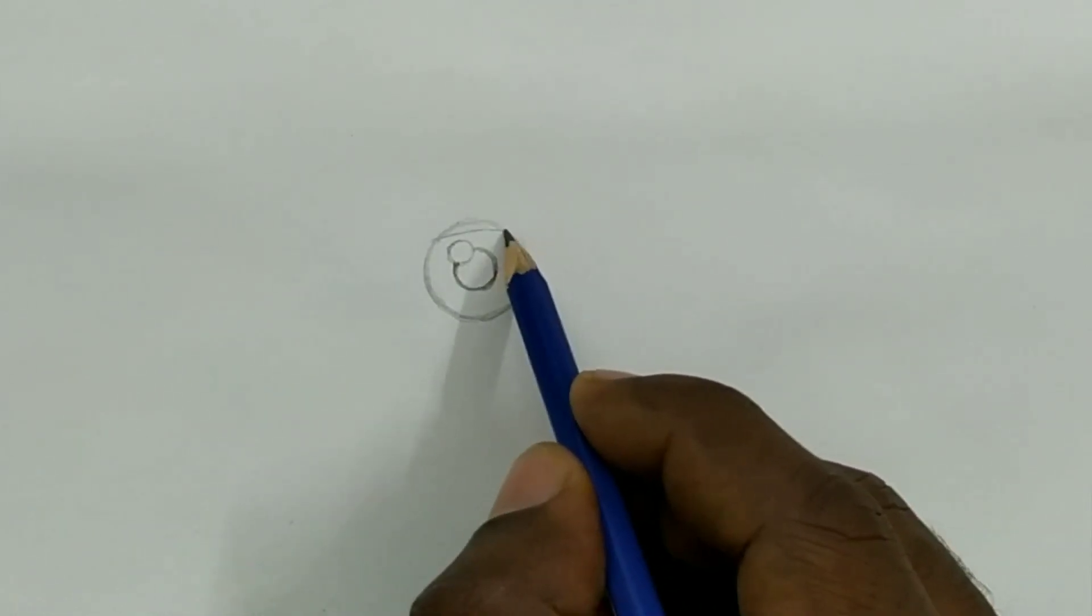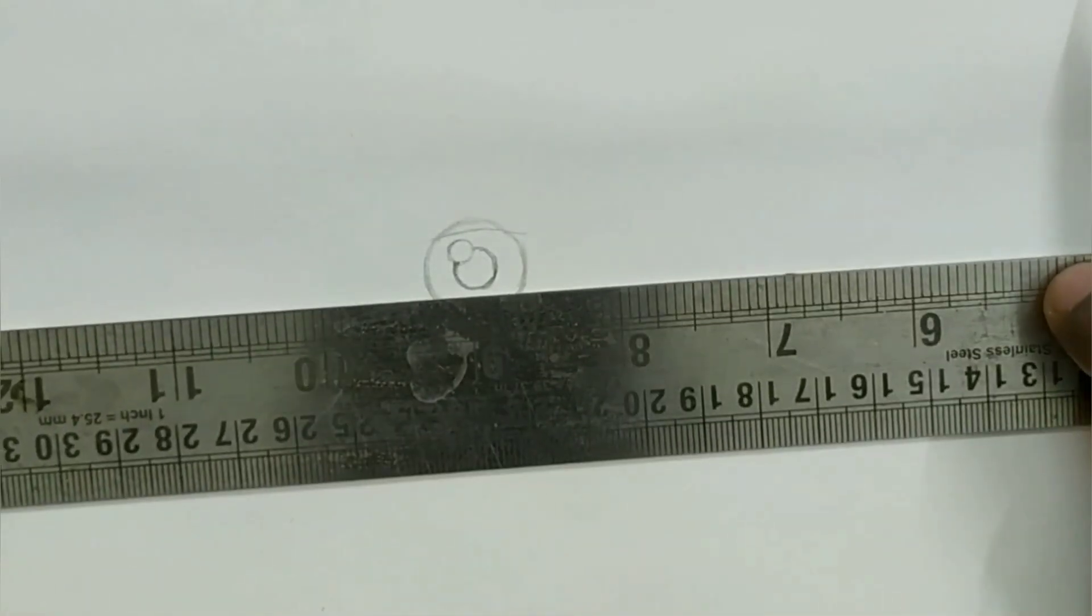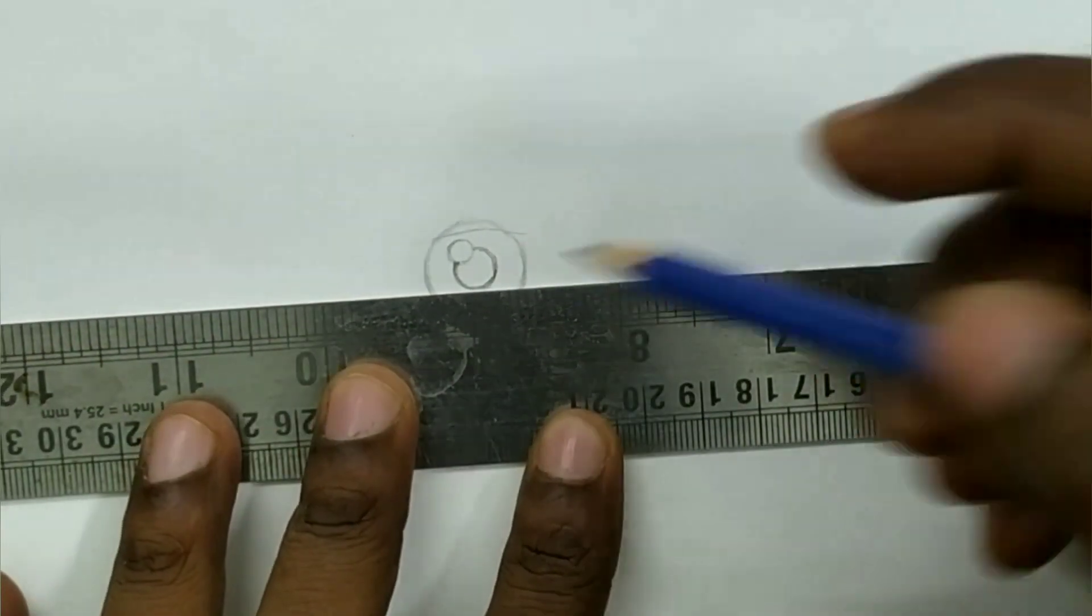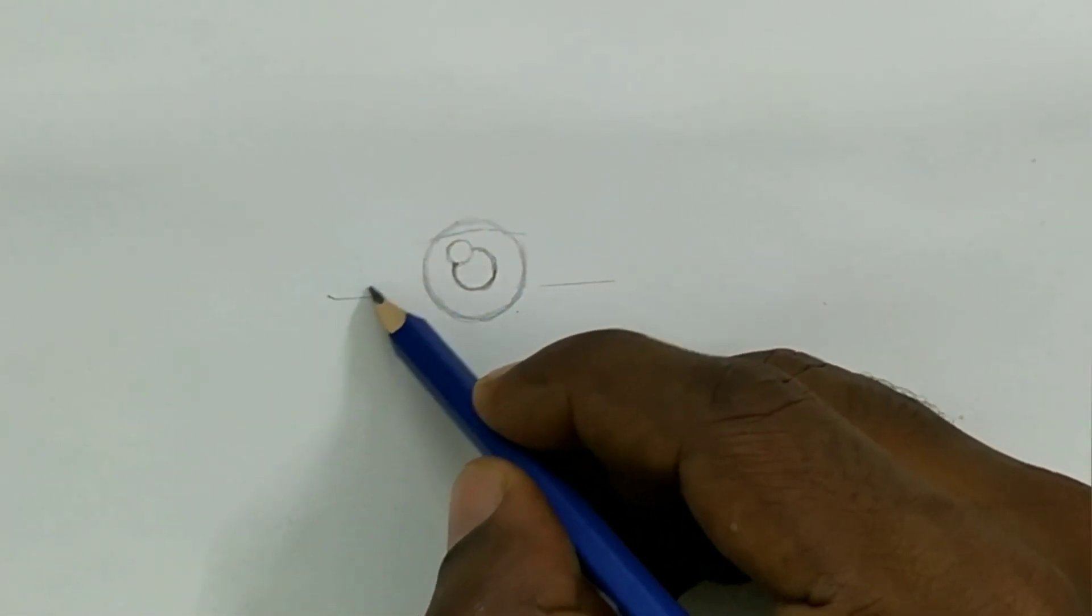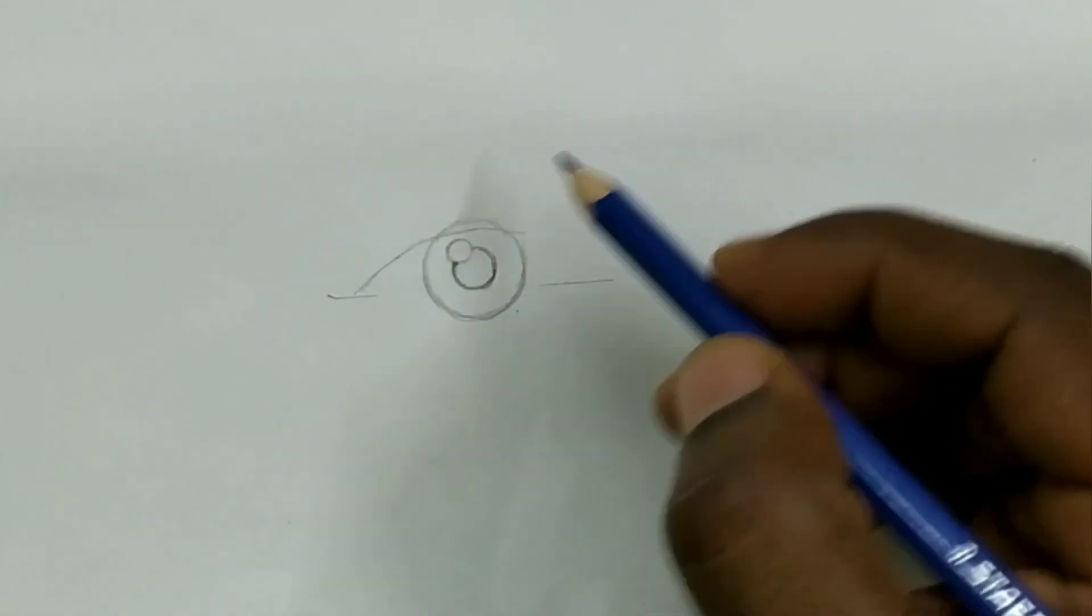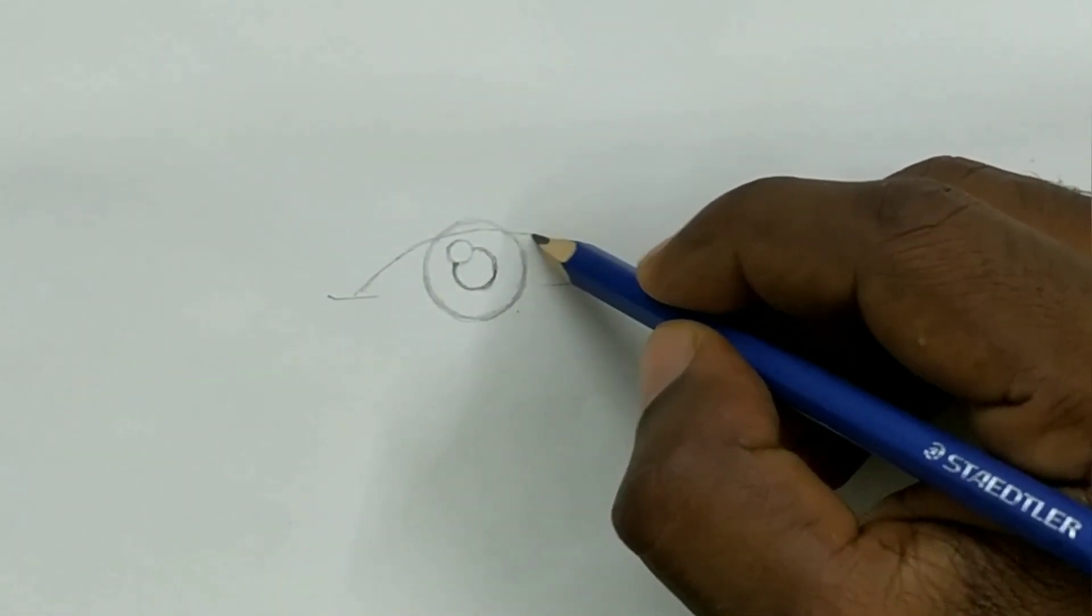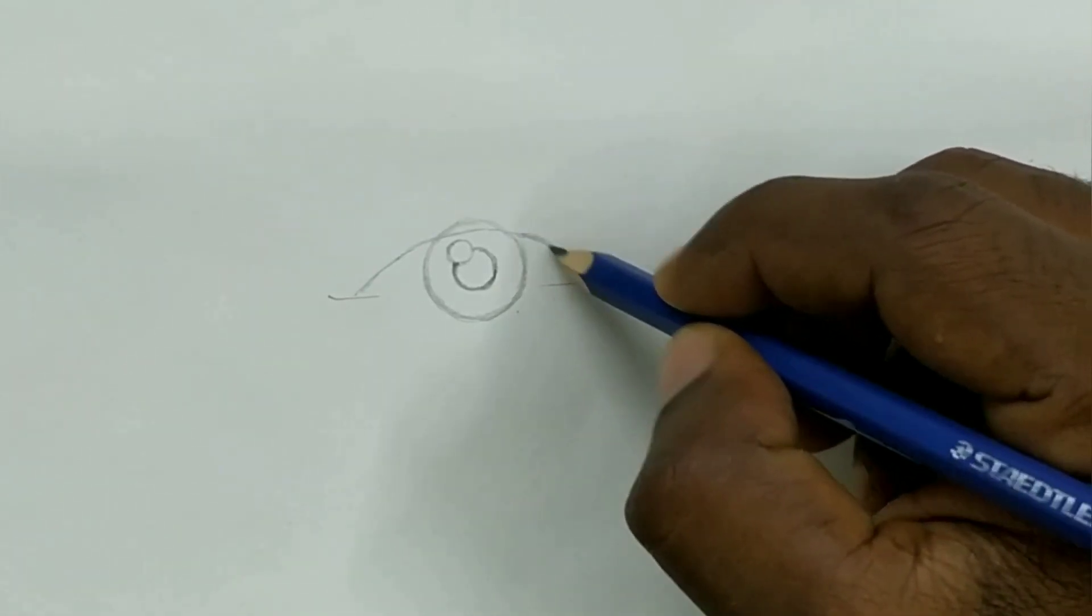Now we are going to make upper eyelid, for that I am using a scale just to mark. Now we will make upper eyelid starting from the line which we made for reference and just above the third circle which is the iris.